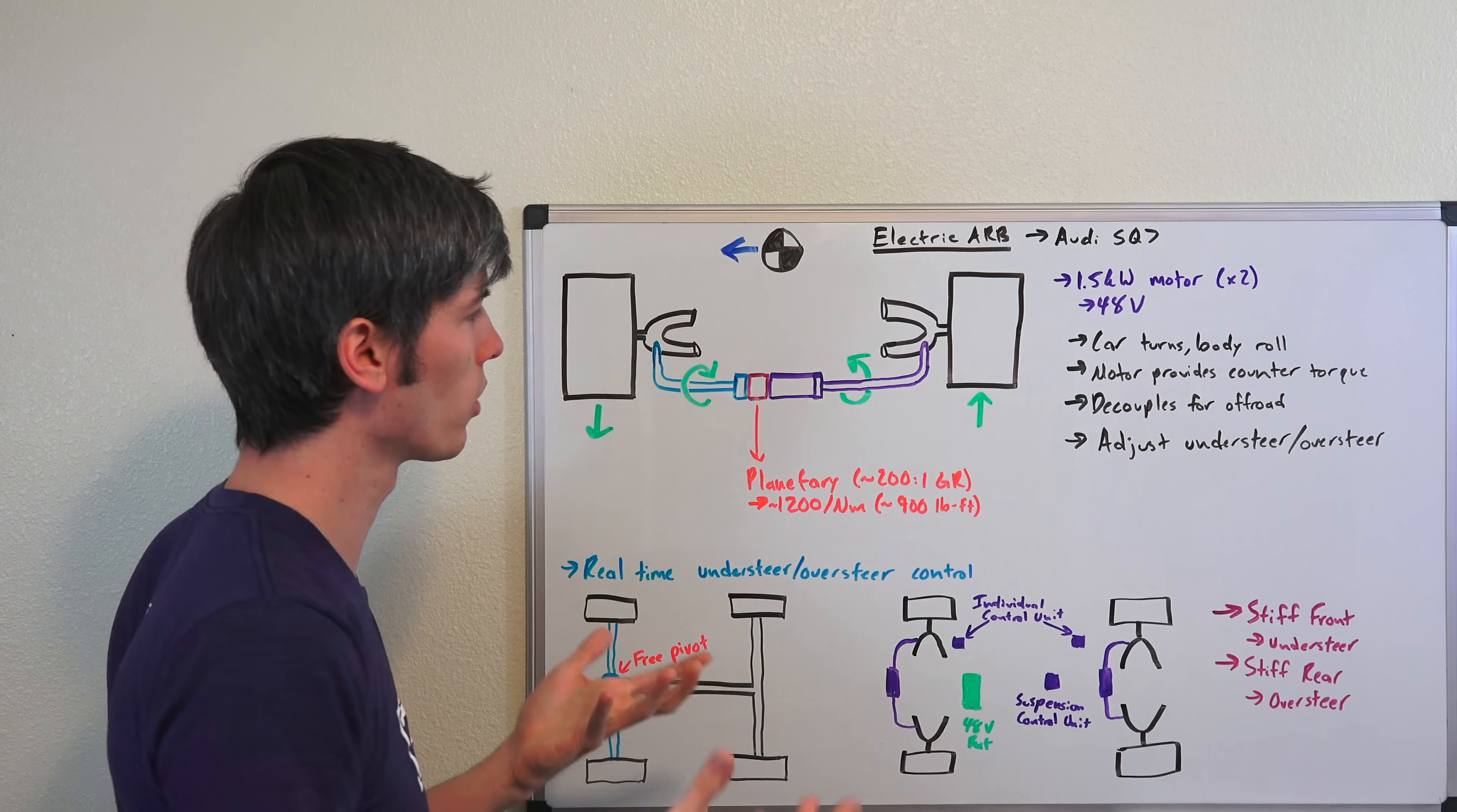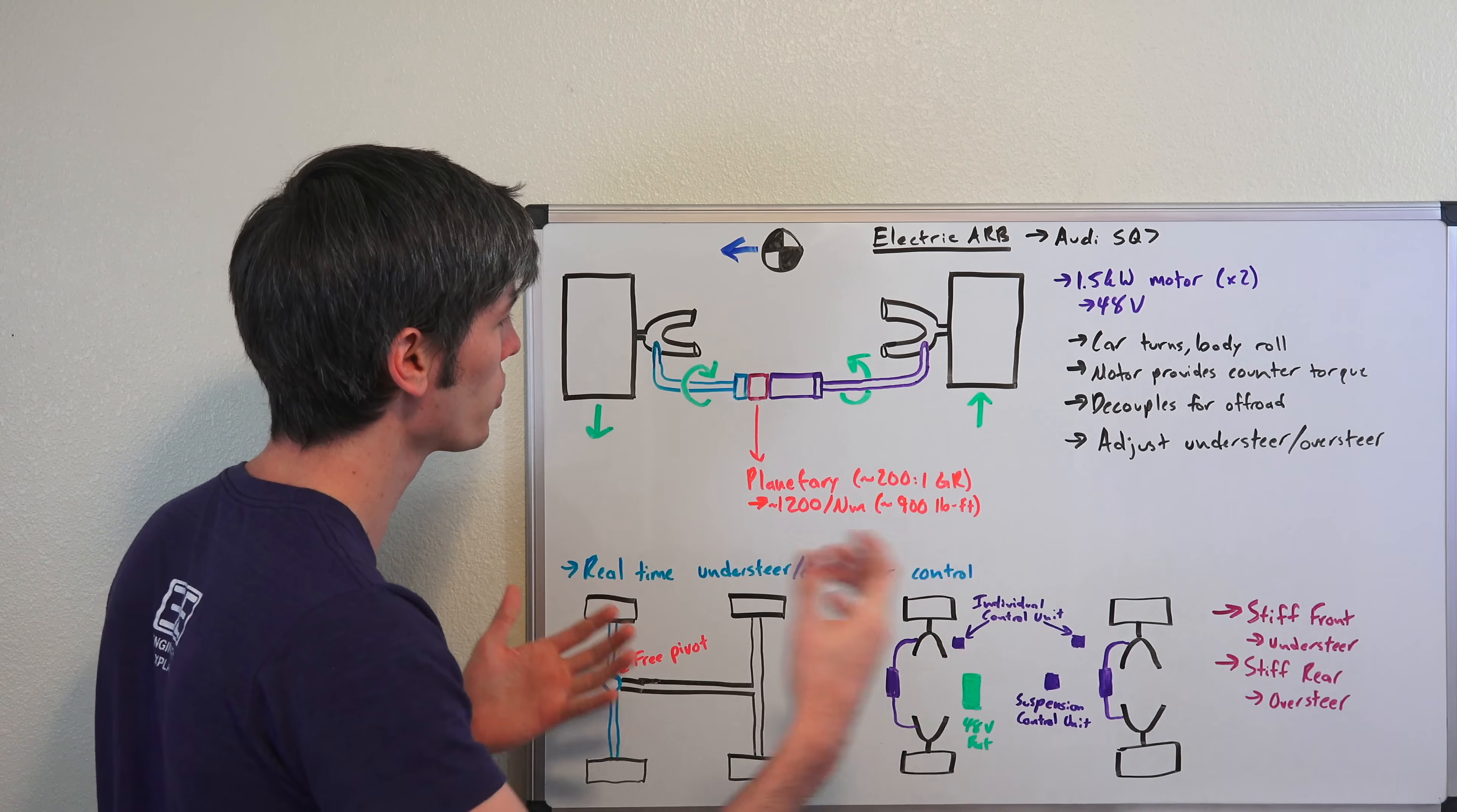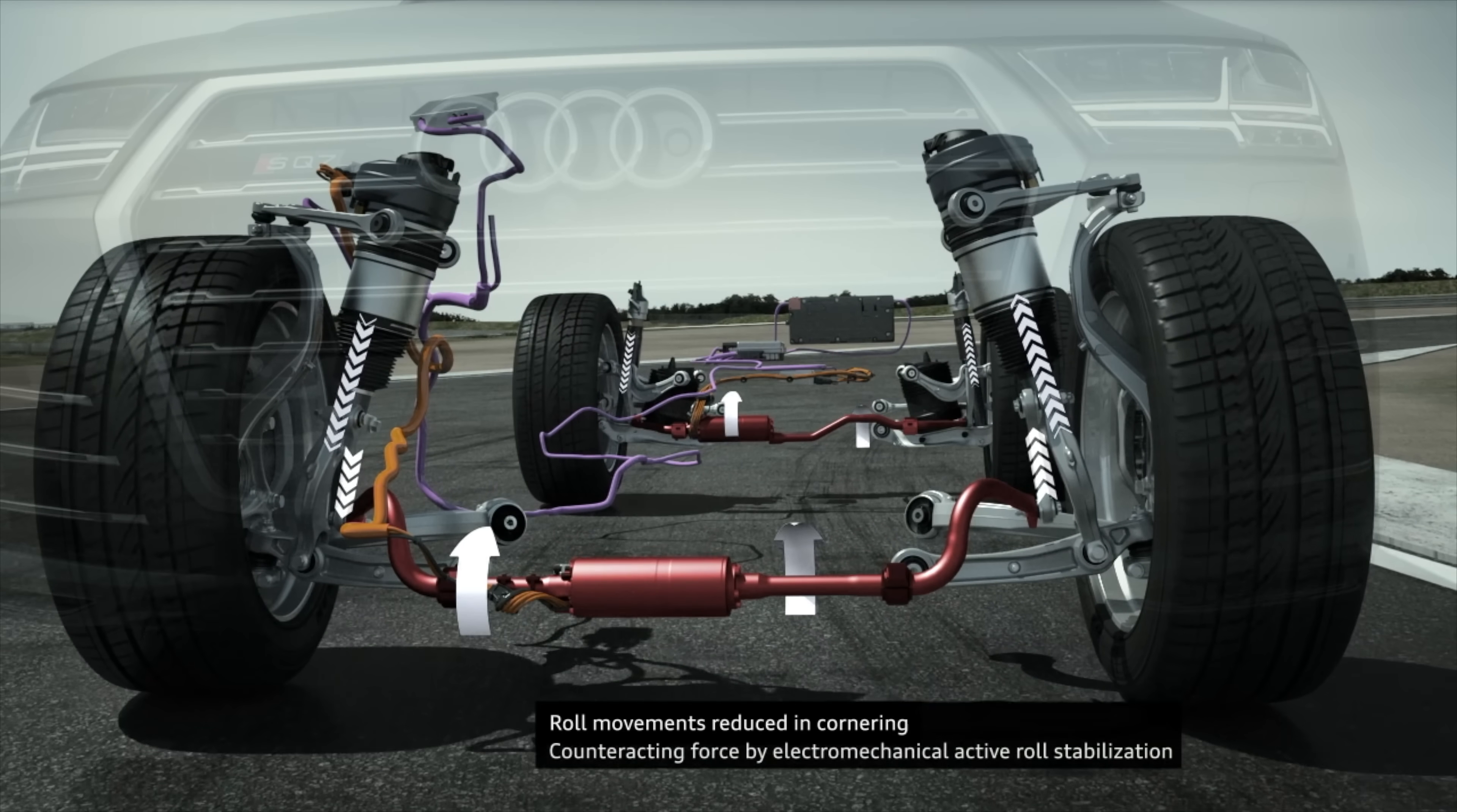Your anti-roll bar is going to counter that. You've got an electric motor which provides torque through a gear reduction—a 200 to 1 gear ratio—pretty insane. With this 48-volt system and 1.5-kilowatt motor, they're saying they can have 1,200 newton meters of torque, or about 900 pound-feet, which you're going to need for a big heavy SUV going around a corner.